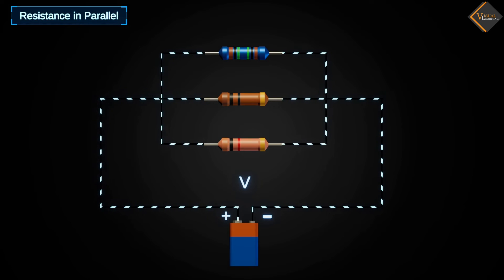Resistance in parallel. In the animation, we see that three resistors are connected side by side, where one end of each resistor is connected to the positive terminal of the battery and the other end to the negative terminal. This is called a parallel connection.